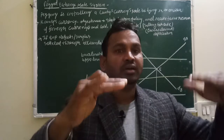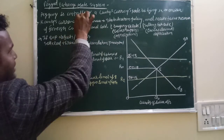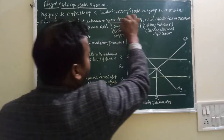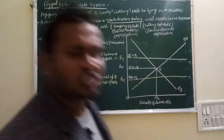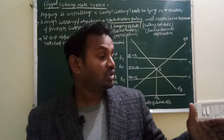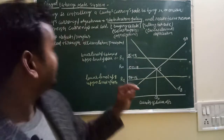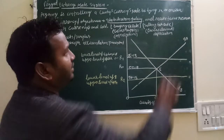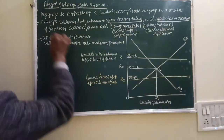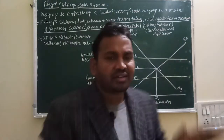Government wants to maintain the level, which is binding. The main objective of the pegging exchange rate is stabilization policies. What do you mean by stabilization policy? Stabilization policy means the government controls the price, controls the exchange rate, and the balance of payment. That is why the government has started the pegging exchange rate — to maintain the reserve of foreign exchange and gold.